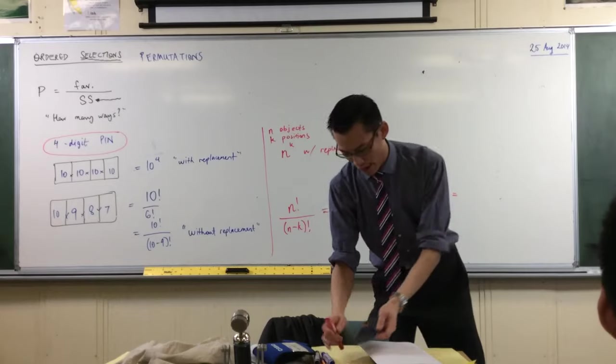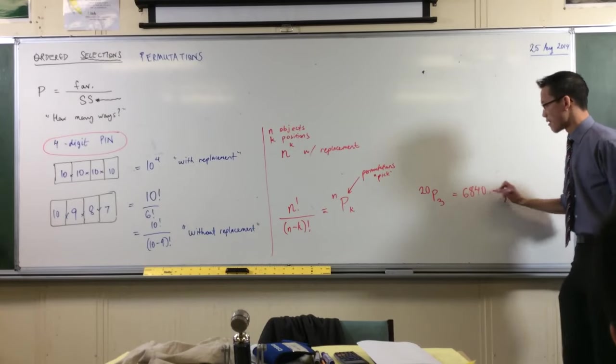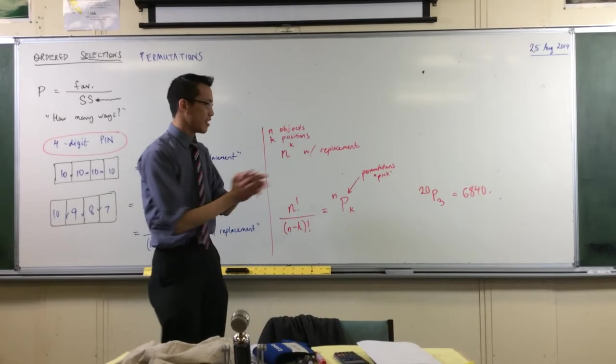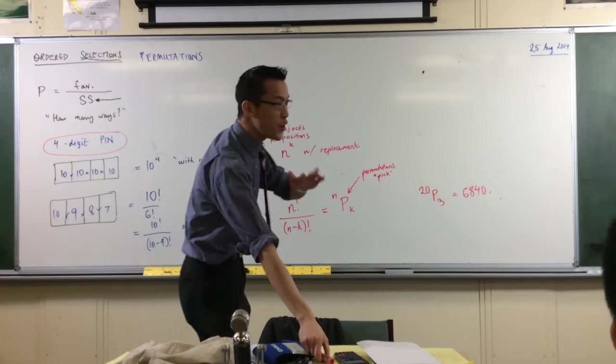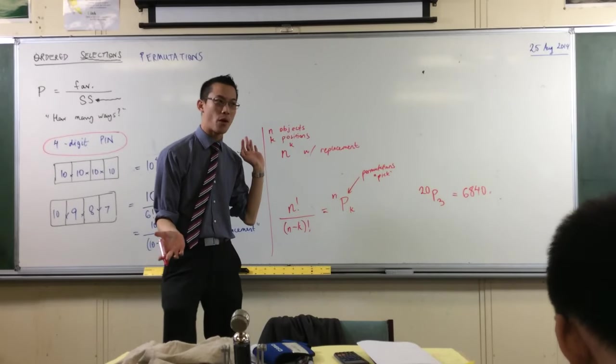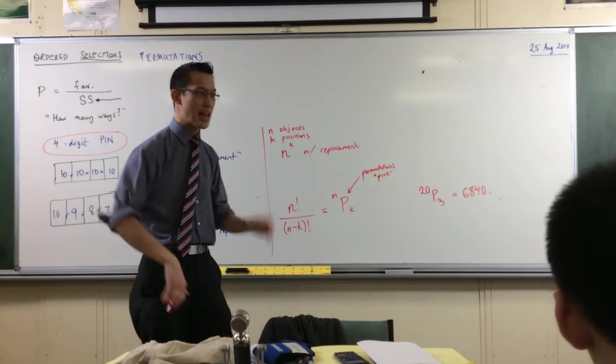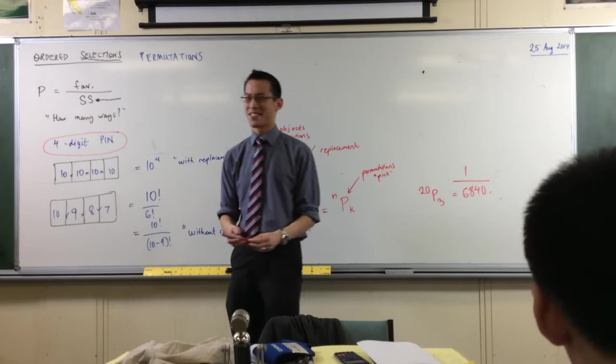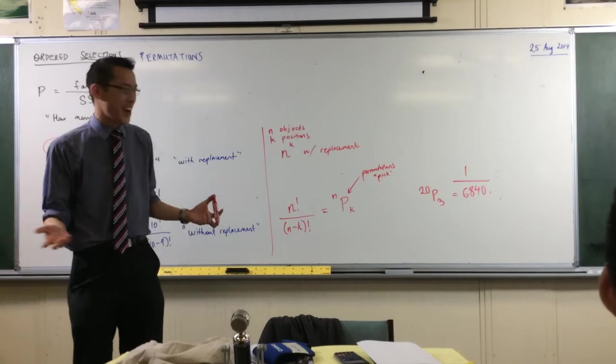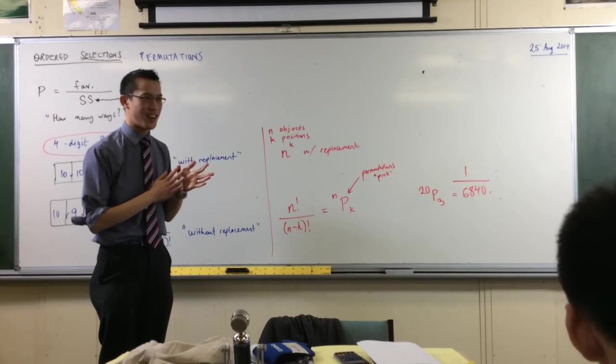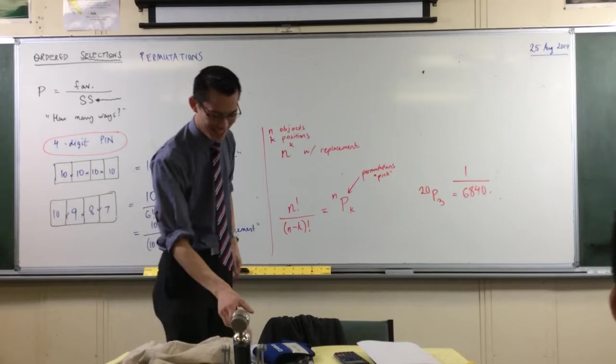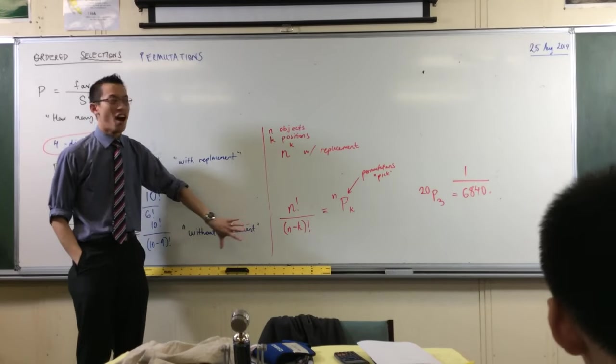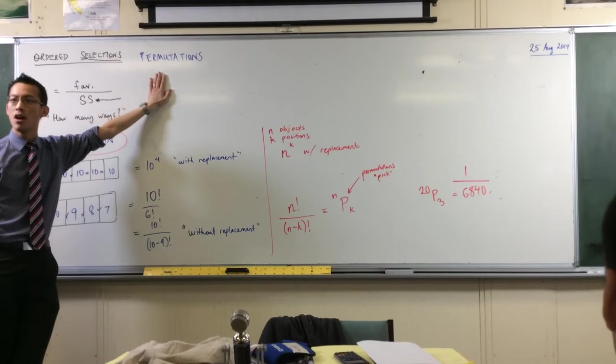What is 20P3? 6,840. So if there's a 20 horse race and you're betting on a trifecta, if you don't know anything and you pick out a trifecta at random - which people at the TAB will just press on a random generator - that means you've got a one in 6,840 chance of getting the trifecta. I think I'd rather go wash your car and ask for ten dollars if I want to earn money. Does that make sense? You've got these two ways of approaching permutations based on whether you're replacing or not.